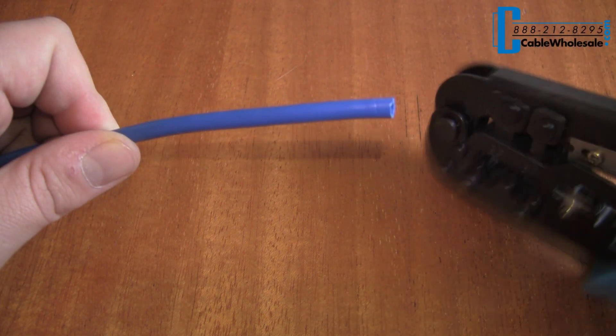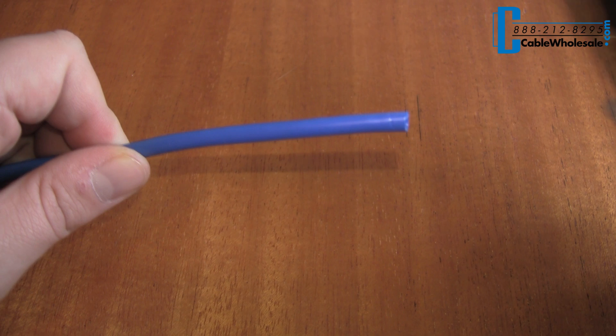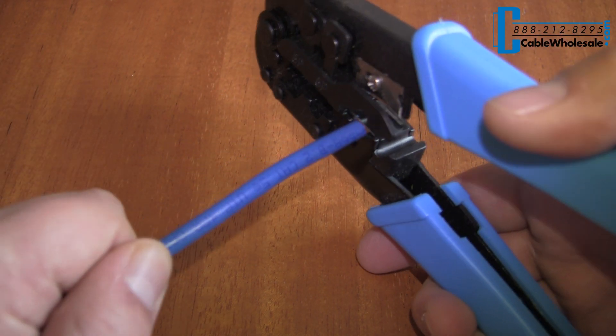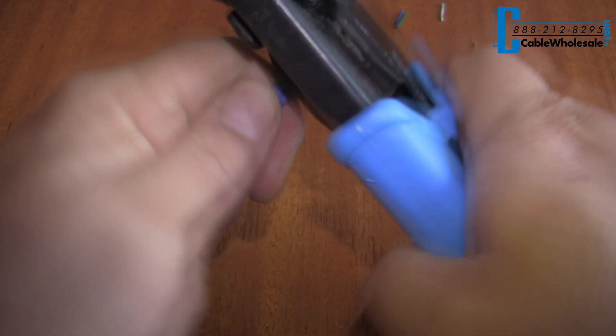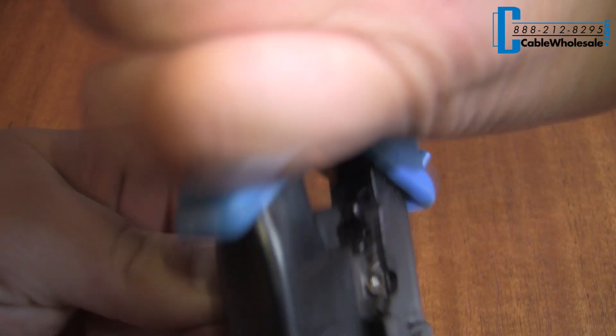Step 1 is to remove the outer jacket. Insert the wire into the crimp tool and squeeze. Give the tool a few twists. This will remove the jacket, leaving you with the perfect length of exposed wires.